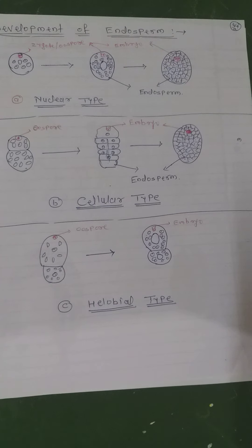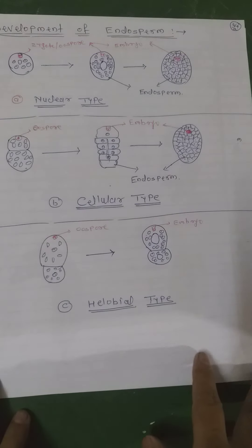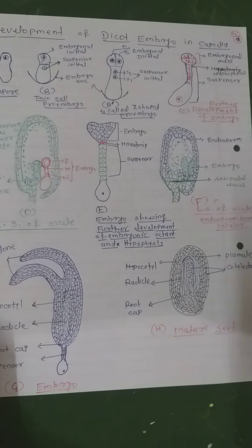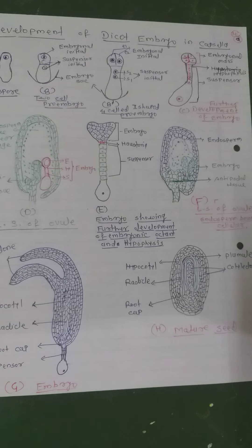It is seen in Asphodelus families. Next, the development of dicot embryo — the process of development of a zygote into an embryo is called embryogenesis. The embryo develops at the micropylar end of the embryo sac. The growth of embryo begins only after a certain amount of endosperm is formed.